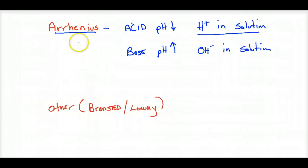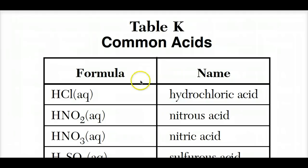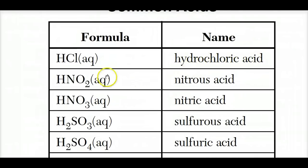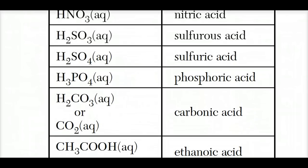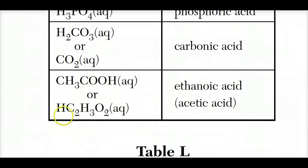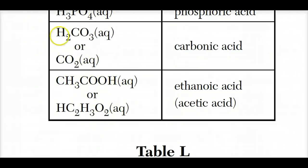Most of the time, if you've got an acid in your problem and need to identify it, it's going to be listed in Table K. Notice the H in front of these acids — that H will dissociate as H⁺. Ethanoic acid (acetic acid) has the H in front as its molecular formula, but the COOH group, an organic acid from Table R, is also an acid. Table E shows both the molecular and structural formulas.